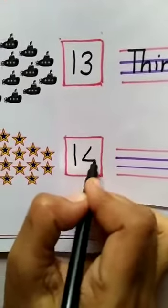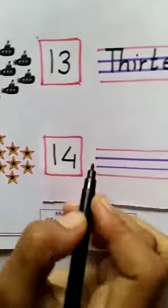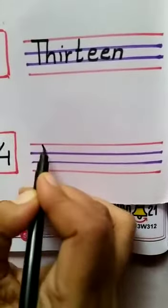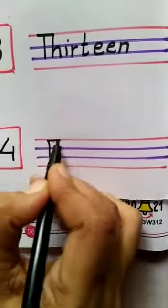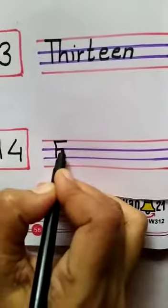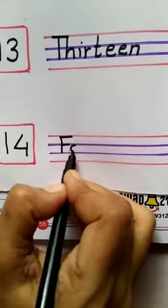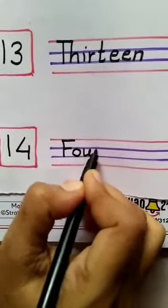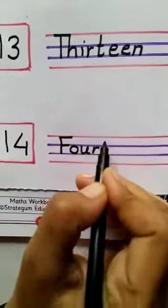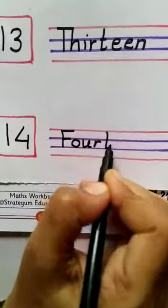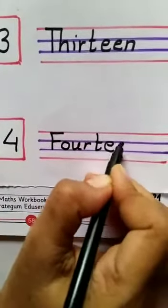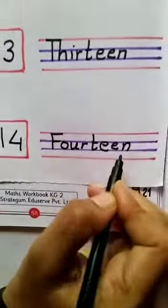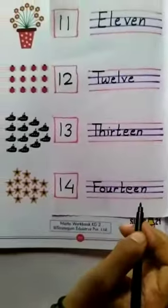Here we will write number 14 and here we will write the spelling: F, O, U, R, T, E, E, N. 14.